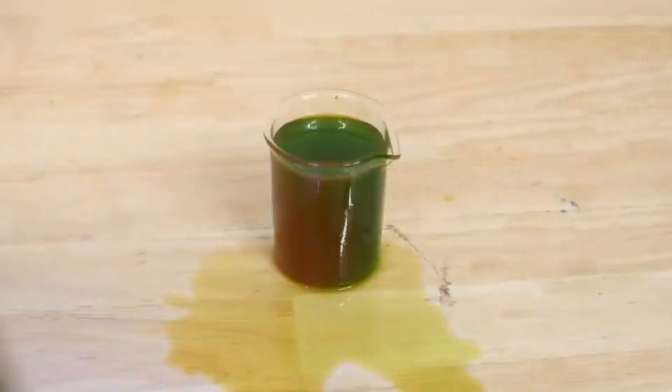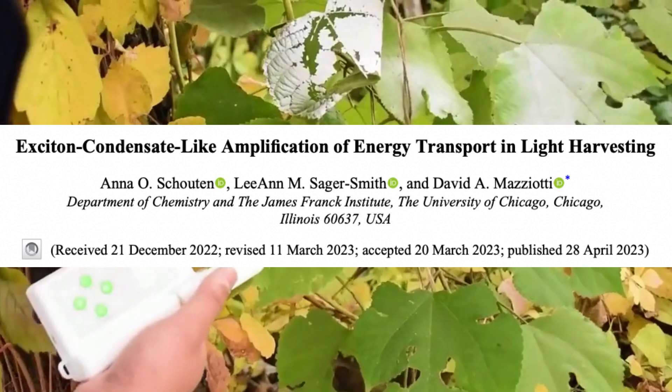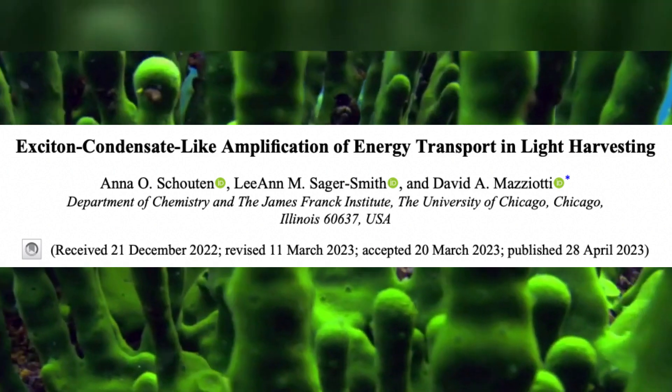However, the path from chlorophyll to the reaction center is neither direct nor straightforward. The energy needs to reach its destination quickly, or it will dissipate as heat. To overcome this challenge, plants employ a clever strategy called quantum coherence.